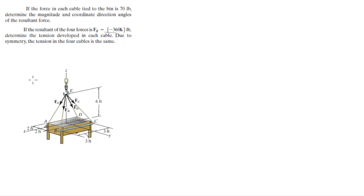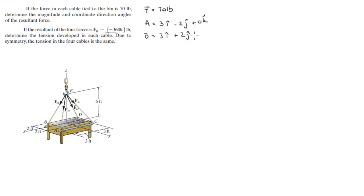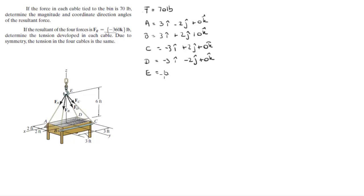The first thing you do is note that the force equals 70 pounds. Point A is at 3i − 2j + 0k, B is at 3i + 2j + 0k, C is at −3i + 2j + 0k, D is at −3i − 2j + 0k, and E — the point right at the top — sits at 0i + 0j + 6k.